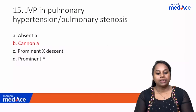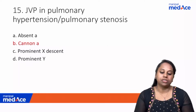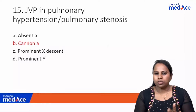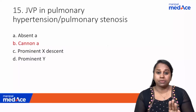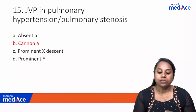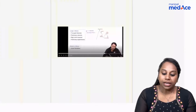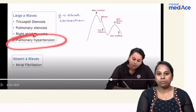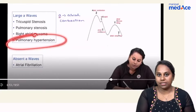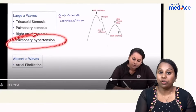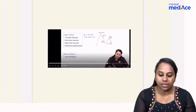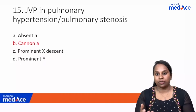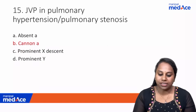Question 15: JVP in pulmonary hypertension or pulmonary stenosis. As discussed, right-sided obstruction causes large a-waves, which are called cannon waves or giant waves. Answer: cannon a-waves or giant waves.